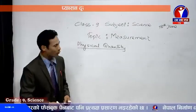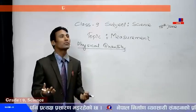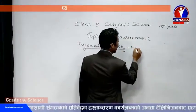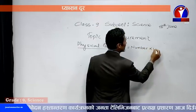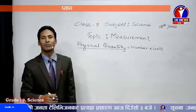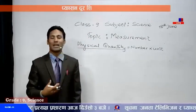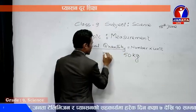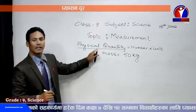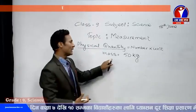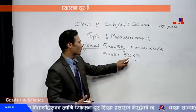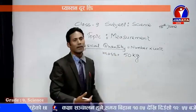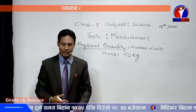Physical quantities can be expressed in terms of two parts: a number and a unit. For example, if I ask the mass of my body, I may say 50 kg. Here, 50 is the number and kg is the unit. So a physical quantity is explained in terms of a number and a unit — that is the representation of a physical quantity.